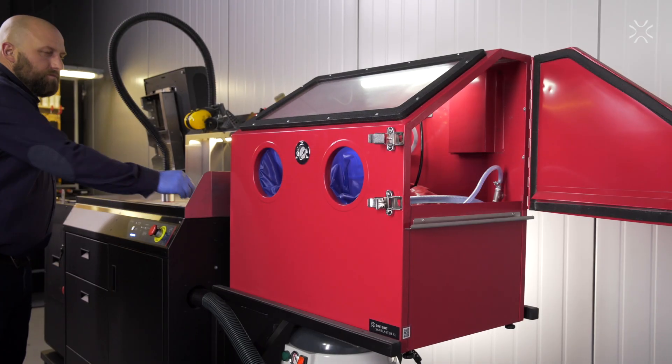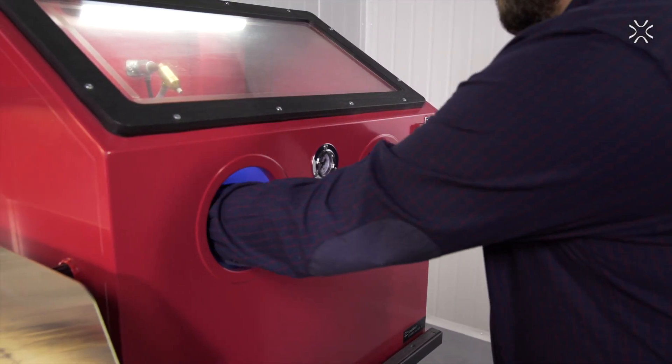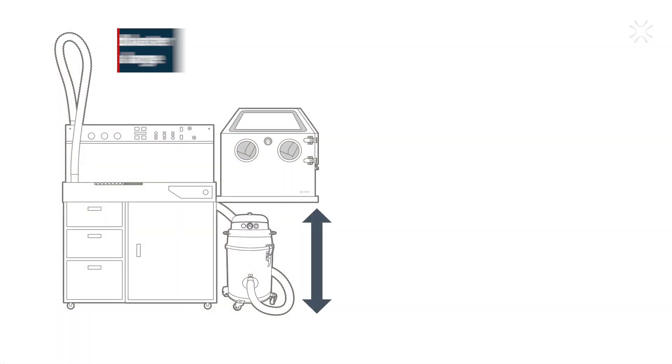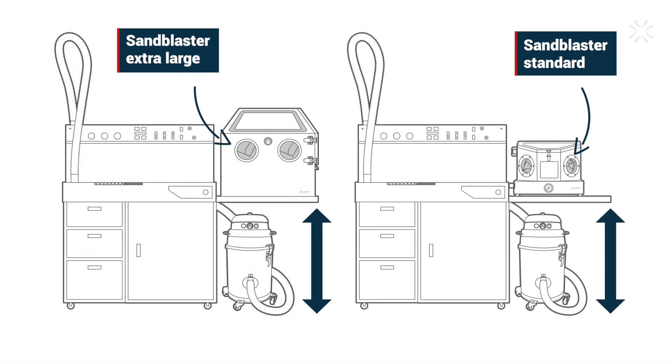To polish your diamond, that is to blast your printout, simply use the sandblaster located on the right side of the PHS. We recommend the extra large model, but the PHS is also compatible with the standard sandblaster.